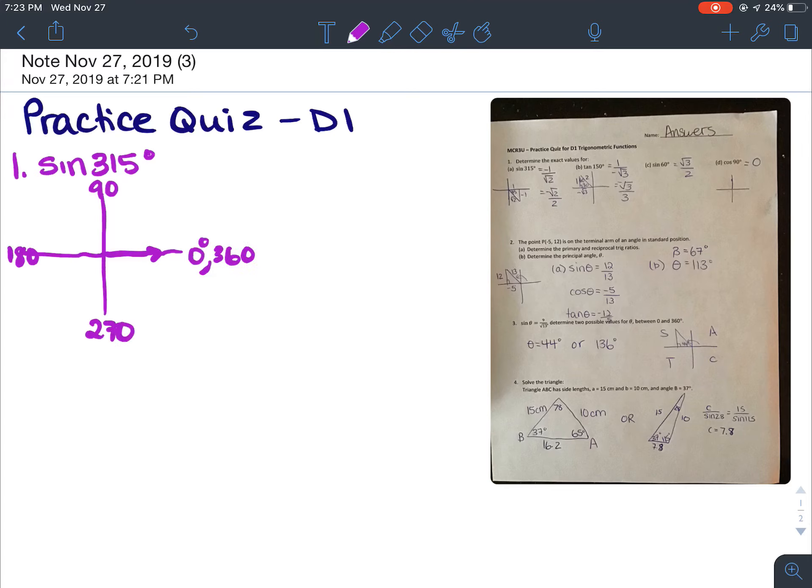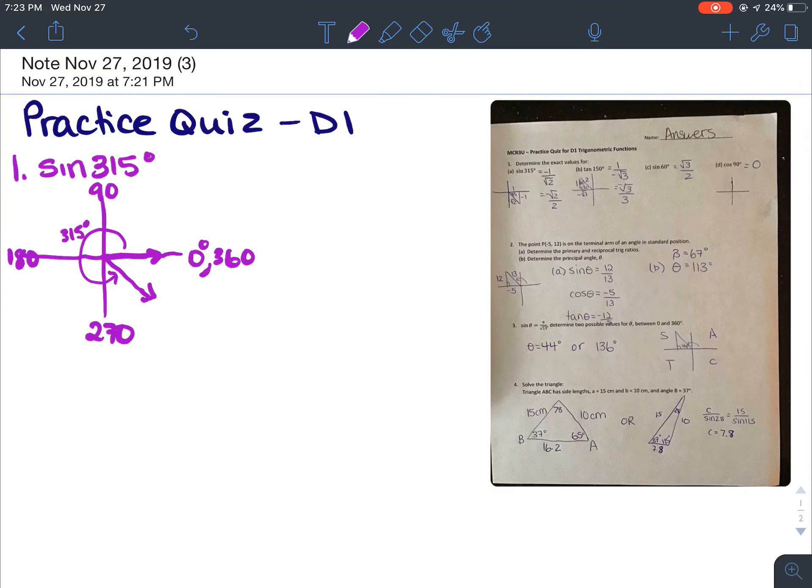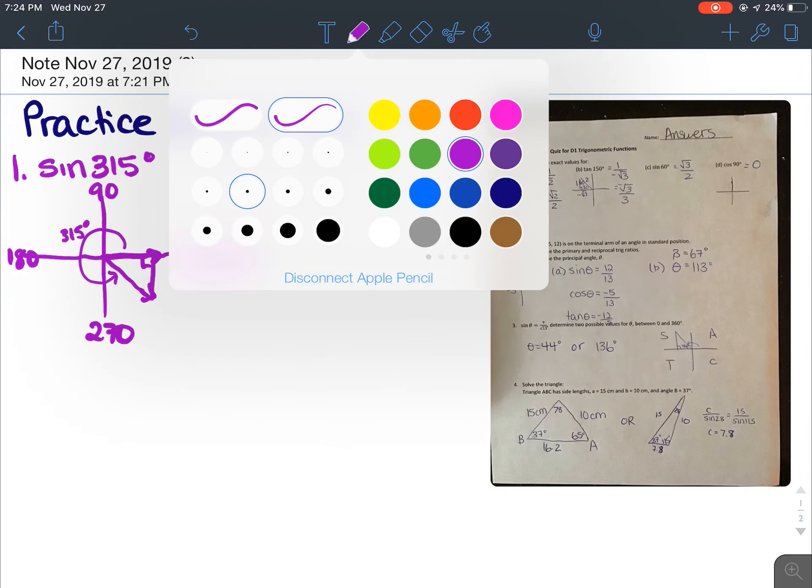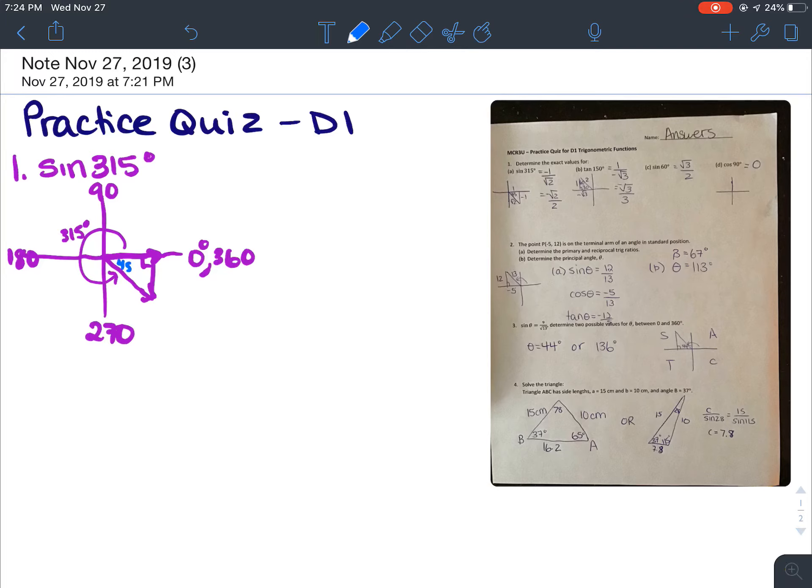So an angle of 315, since our angles always go in a counterclockwise direction, would be in quadrant 4. So that would be 315 degrees. And if you make a right angle triangle, then our related angle would be 45 degrees. So now you know you have the 45, 45, 90 triangle.